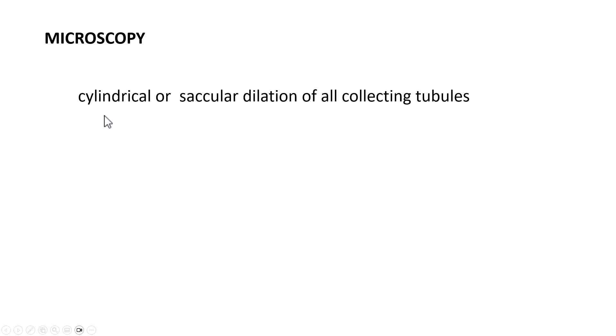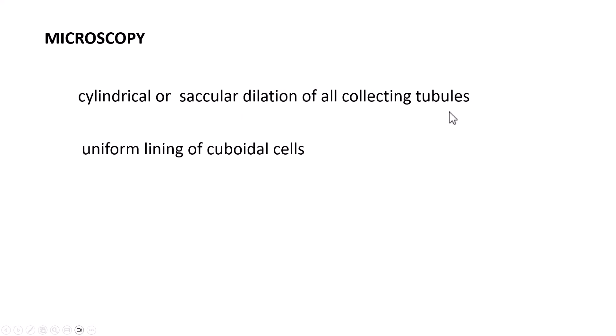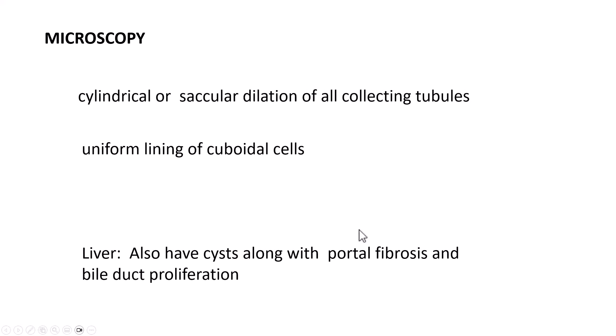Microscopically, the disease primarily affects the collecting tubules, because fibrocystin is responsible for collecting duct differentiation. The dilatation is often cylindrical or saccular, involving all collecting tubules, and there is uniform lining of cuboidal cells of these cystically dilated tubules. The liver can also have cysts, along with portal fibrosis and biliary proliferation.